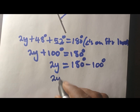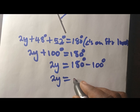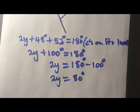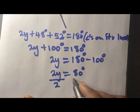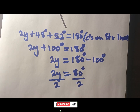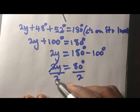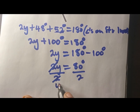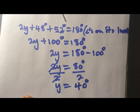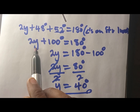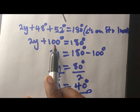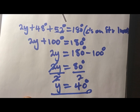We have 2y equals 80 degrees. Now I need to divide both sides by 2. Why am I doing this? In mathematics, everything has a reason — it's because we want to isolate Y. So this gives us Y = 40 degrees. Think of it like: 2 times 40 is 80, plus 100 is equal to 180 — which confirms our answer is correct.